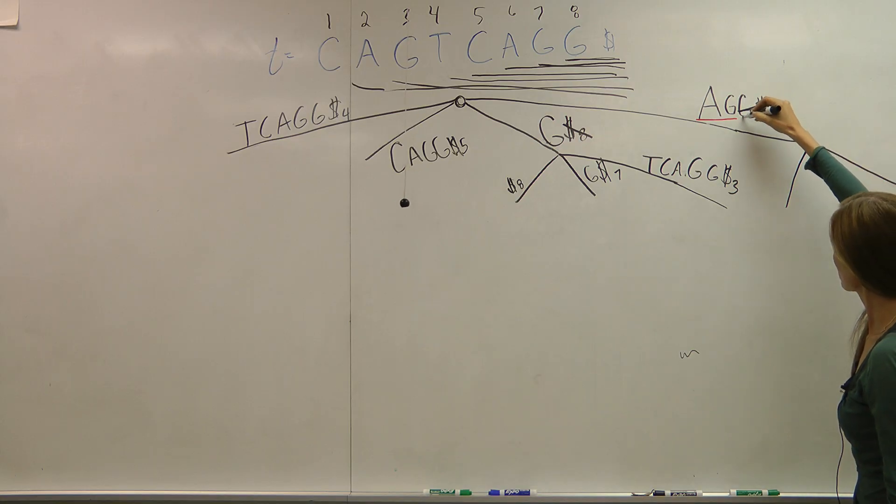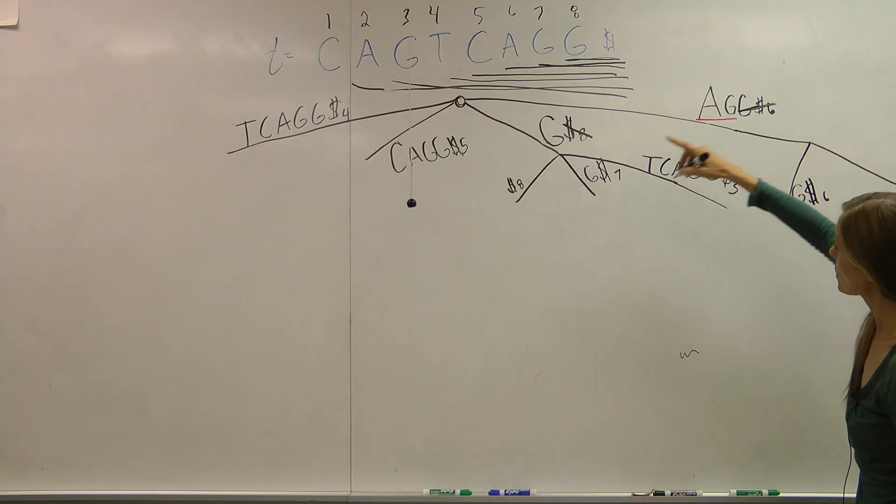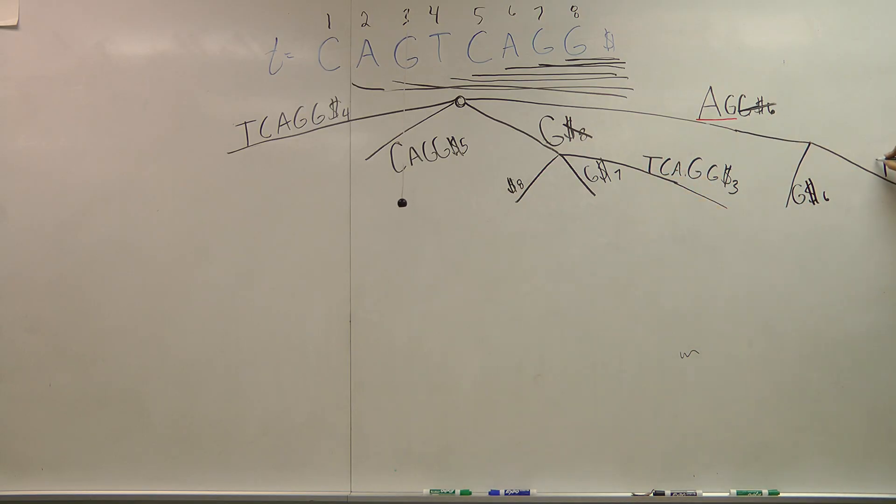One fork is this original option, which was G. And then the next fork is our new option, which is T, C, A, G, G. And that started at index 2.